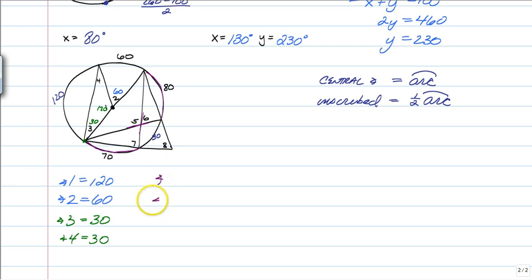Now from there, you can just use linear pair. If angle 6 is 75, then this has to be 105. So angle 5 is going to be 105 degrees.